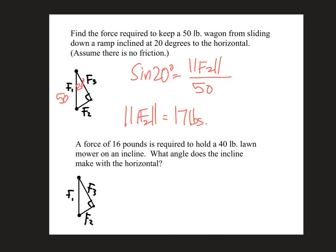Okay, the second problem we want to know what the angle is. We know that it's a 40 pound lawn mower and it requires a force of 16 pounds to hold it. So the sine of the unknown equals 16 divided by 40, and we end up with the angle is 23.6 degrees. That's it. Your homework will have two problems like this and three problems like the night before. Hopefully you have no problem. We will talk about it later.